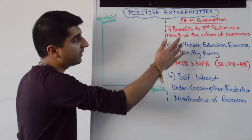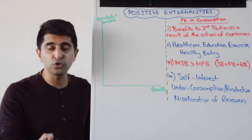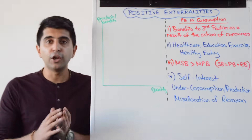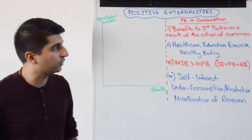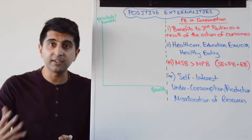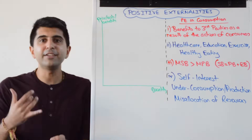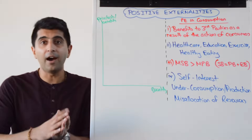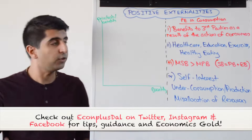The definition is in red. They're benefits to third parties as a result of the actions of consumers. Remember that third parties are economic agents not involved in the transaction or the activity at all. Let's have a look at some examples of why consumption can lead to positive impacts on a third party. Let's take healthcare — being vaccinated against the flu as an example. Third parties could be other people in society that benefit because there is less risk of them getting the flu.